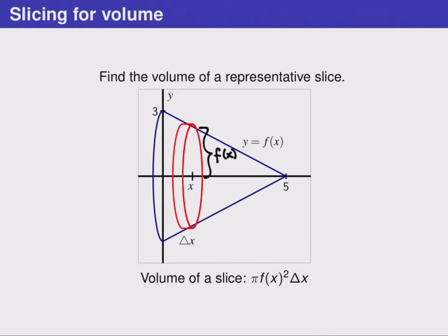That lets us write the volume of a slice. And this is just the area of a cylinder, pi times the radius squared times delta x.